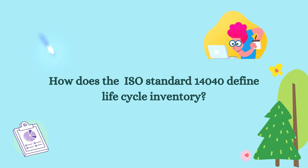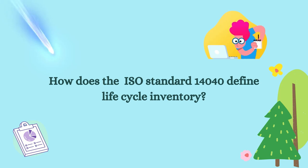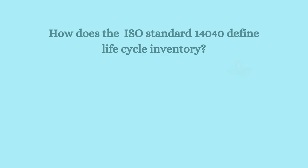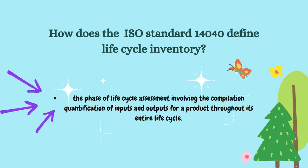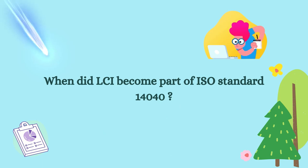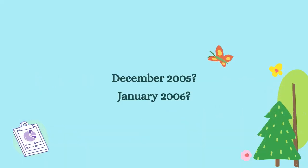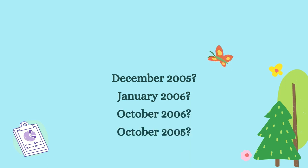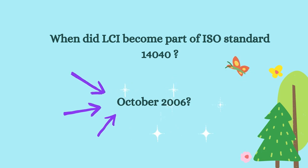The first review question is: how does ISO standard 14040 define life cycle inventory? The answer is: as the phase of life cycle assessment involving the compilation and quantification of inputs and outputs for a product throughout its entire life cycle. The second question is: when did LCI become part of ISO standard 14040 — December 2005, January 2006, October 2006, or October 2005? The answer is October 2006.